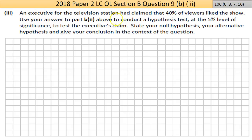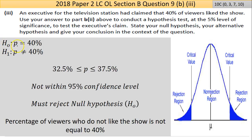Part three says an executive for the television station had claimed that 40% of viewers liked the show. Use your answer to part B2 to conduct a hypothesis test at the 5% level of significance to test the executive's claim. You have to state your null hypothesis, your alternate hypothesis, and give your conclusion in the context of the question. These are hard - I find this challenging. First thing we're going to do is write down our null hypothesis: H₀: p = 40%, the executive is saying that 40% of people like the show. Our alternative is H₁: p ≠ 40%. From our interval from before, we know that between 32.5% and 37.5% of people like the show. Your 40% is not within that range, so therefore the null hypothesis is not correct, so we reject it.